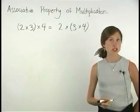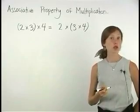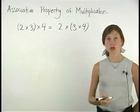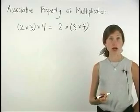According to the associative property of multiplication, when we're multiplying more than two numbers, the grouping of the factors does not change the product.